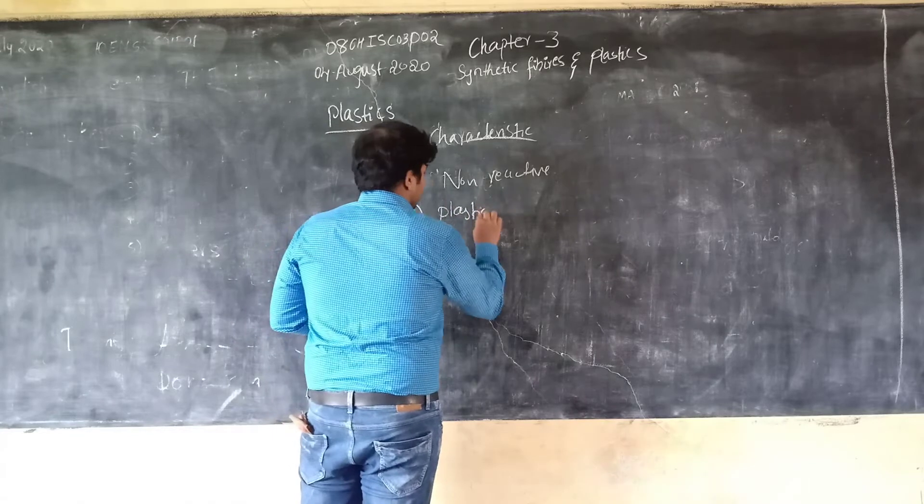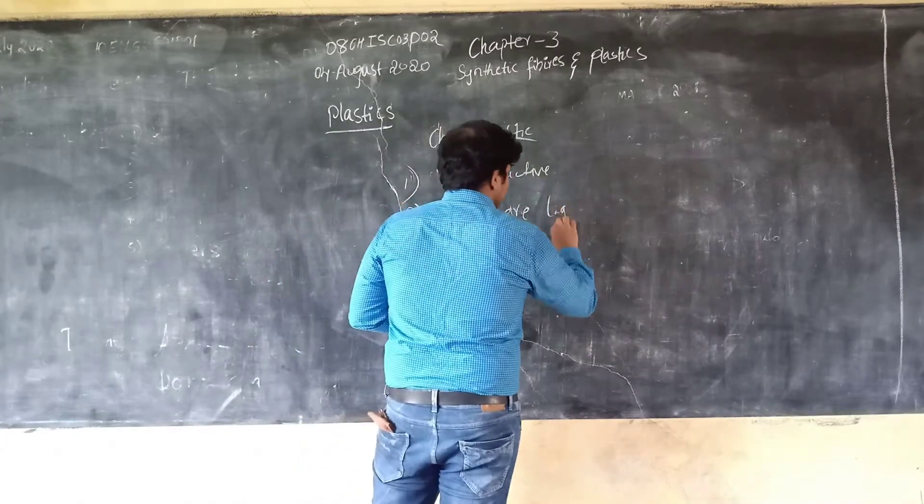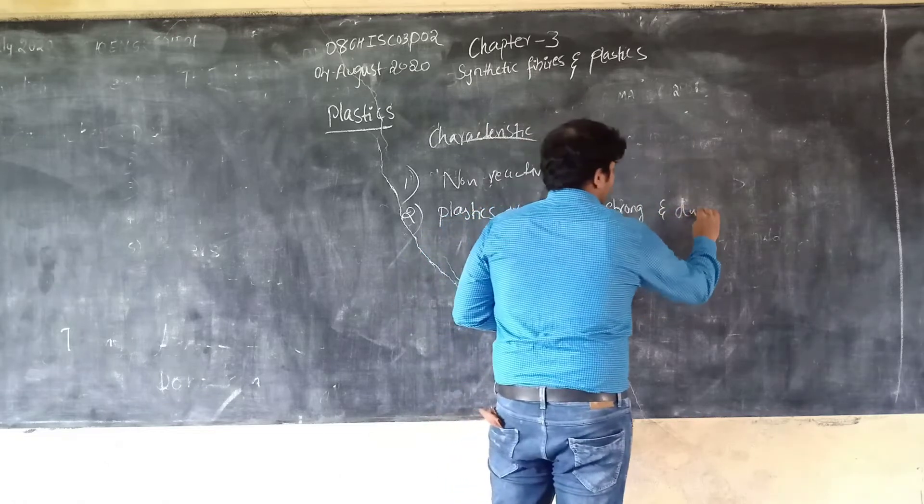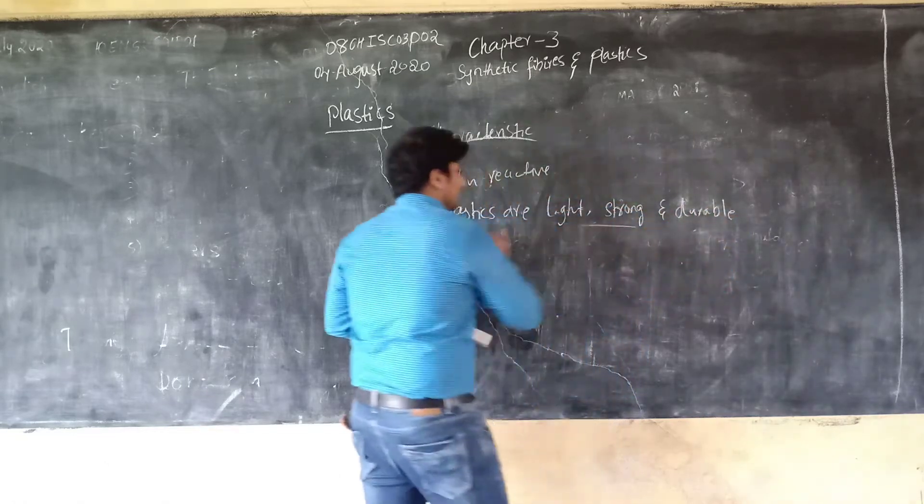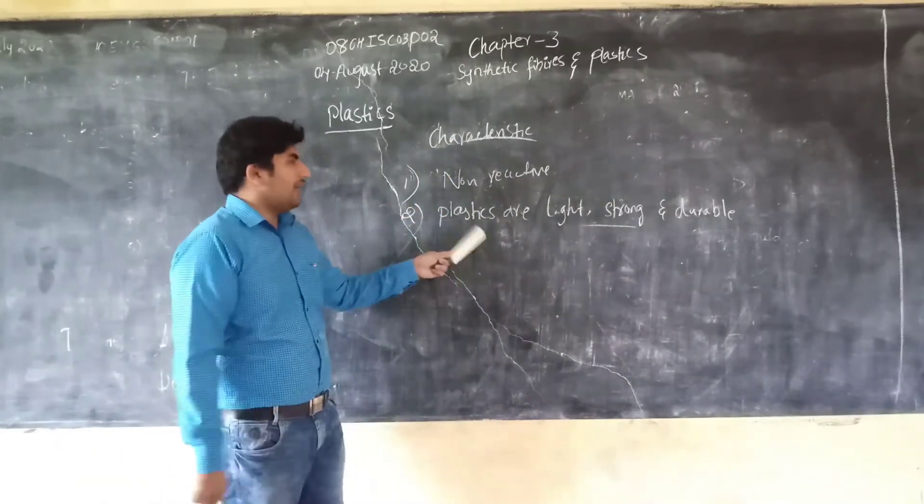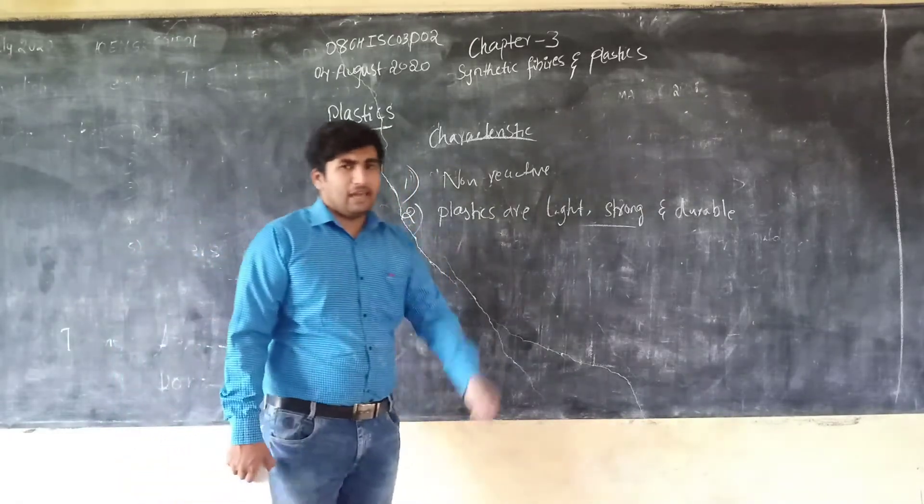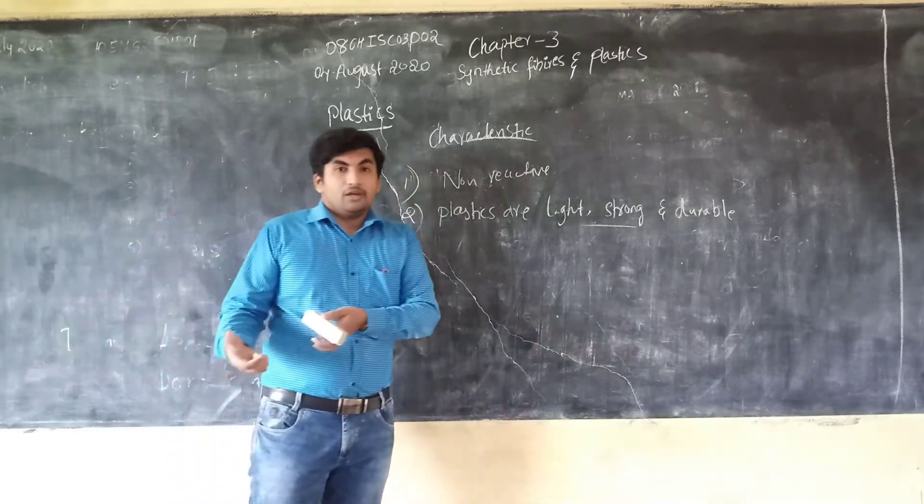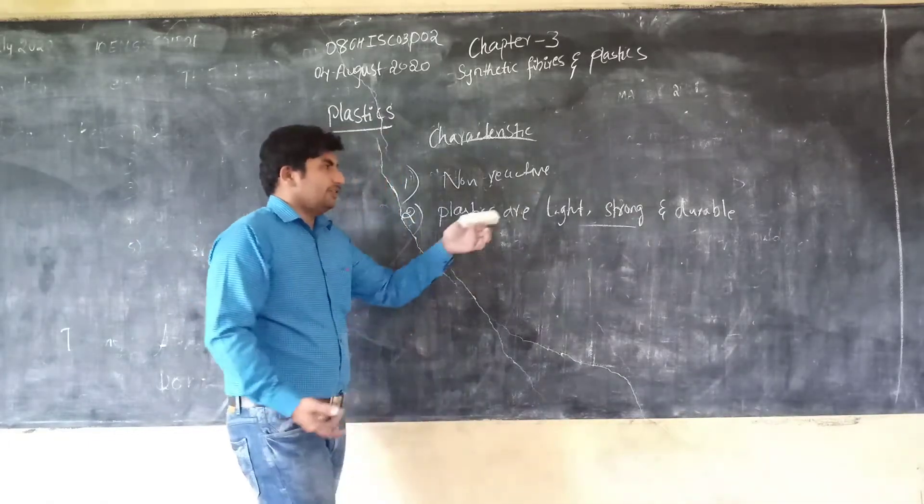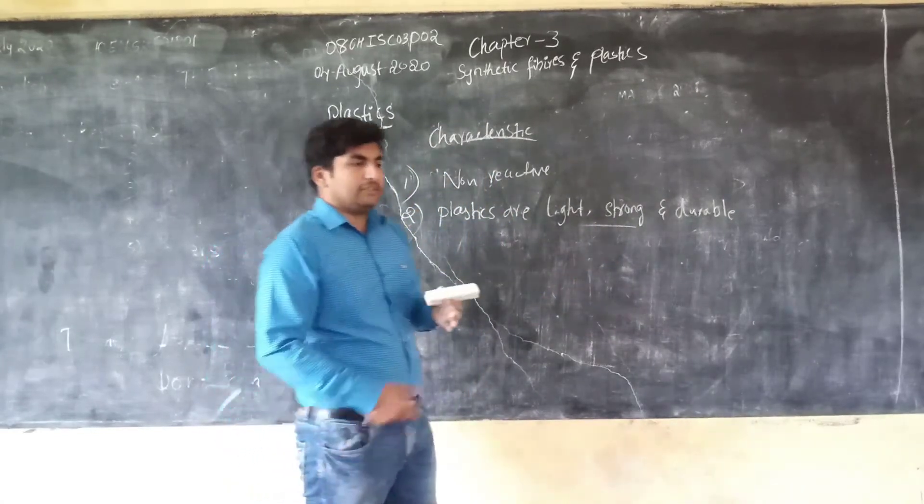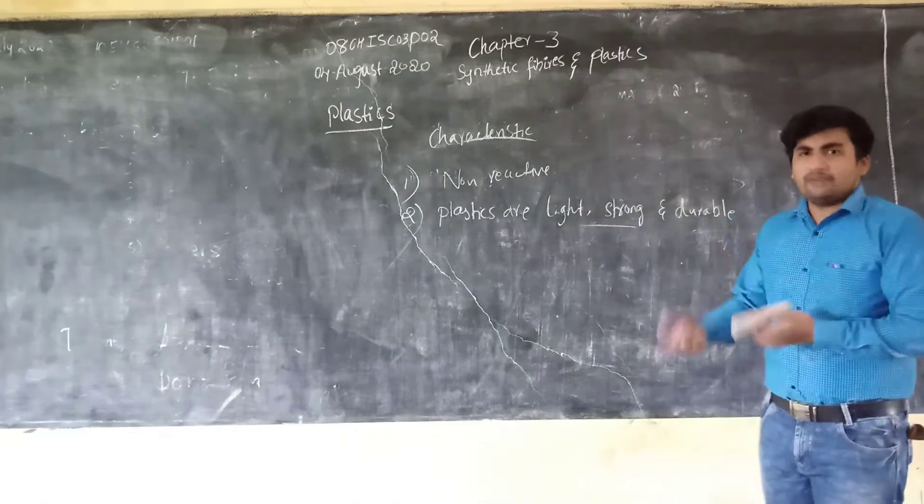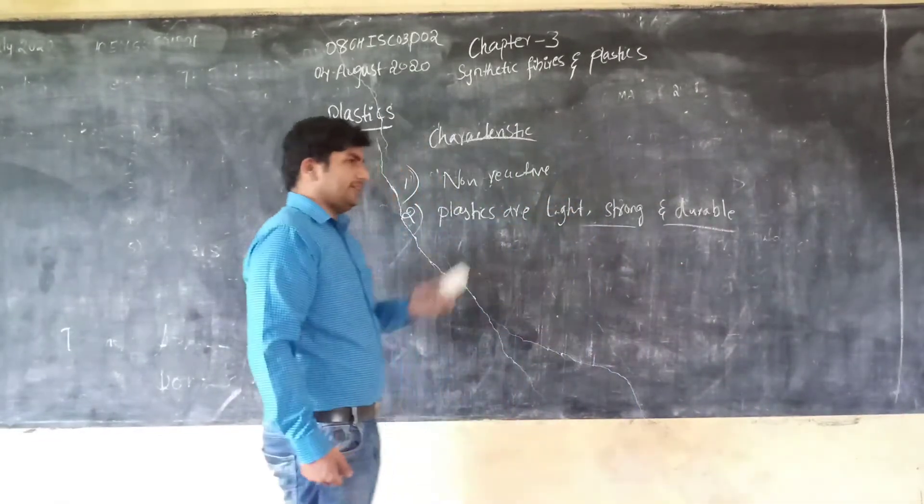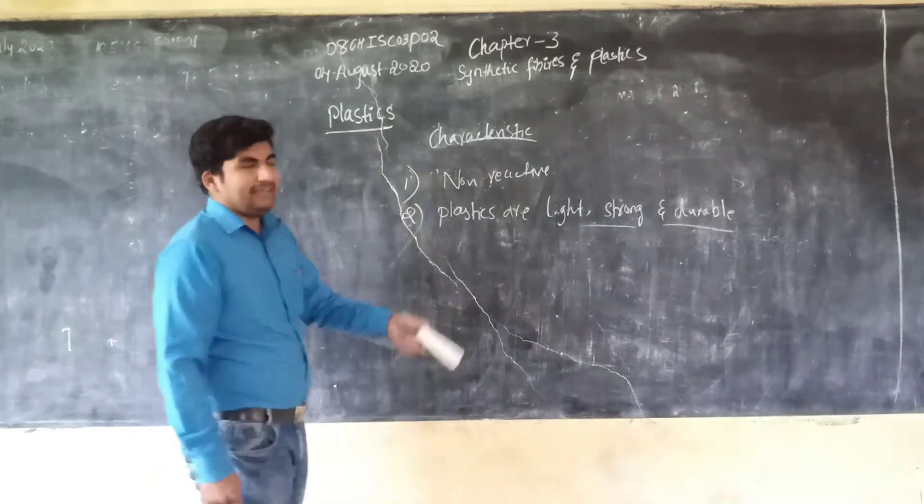Then, plastics are light, strong, and durable. These three words are important. Light means we can easily handle it. Strong means it can balance weight up to more than a hundred kilograms, so it will be strong enough. Then durable. Durable means its life is several years. Plastic chairs, plastic bottles - we can use them for several years. So plastics are light, strong, and durable.